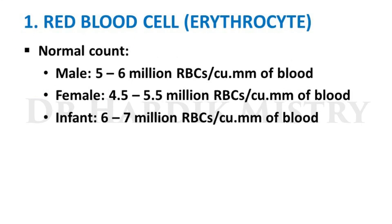Red blood cell, which is also known as erythrocyte. Normal count in male: 5 to 6 million RBCs per cubic mm of blood; in female: 4.5 to 5.5 million RBCs per cubic mm; in infant: 6 to 7 million RBCs per cubic mm of blood.